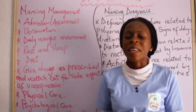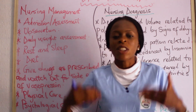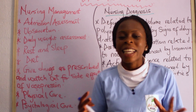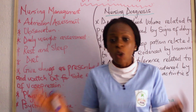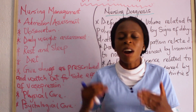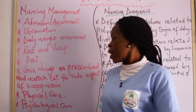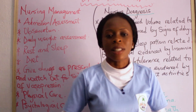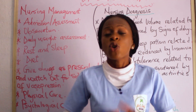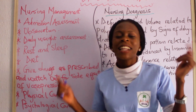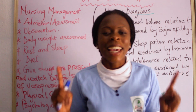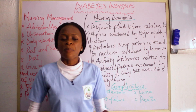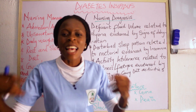Encourage your patient to rest and get enough sleep. In terms of diet, ensure your patient takes the essential nutrients needed for growth and development. Give drugs as prescribed: give the prescribed vasopressin, the prescribed diuretics, and the prescribed intravenous infusion such as dextro saline. Watch out for side effects of vasopressin — one of the side effects is abdominal cramps. Physical care is not left out: that includes oral care and bed baths. Psychological care should also not be left out — establish good rapport and communicate effectively with your patient.